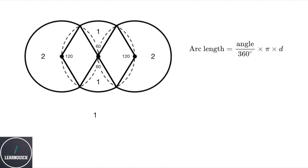So for shape one, the interior angle is 60 degrees. So it's 60 over 360 times pi times 2r. Simplifying this gives us pi r over 3. And because there's two of these arcs, times it by 2 gives us 2 pi r over 3.